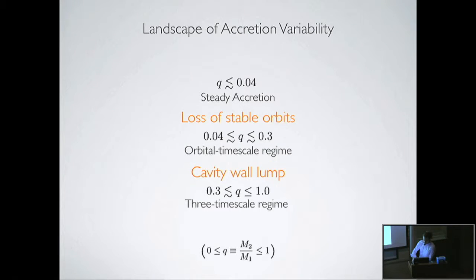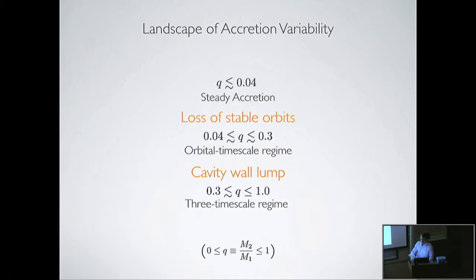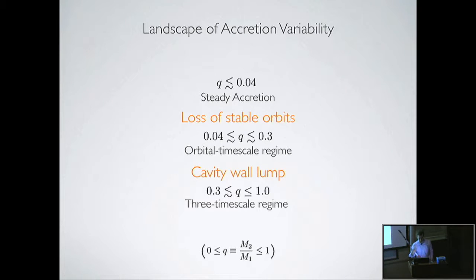I just wanted to paint this picture with mass ratio. I haven't said anything about eccentricity—there are a few groups working on what happens to this periodicity with eccentric binaries, which you might expect because these lopsided cavities can drive the binary to become eccentric, which is important for understanding the gravitational wave background. I wanted to put forward this mass-ratio-dependent picture of what you might expect from periodicities, because it's interesting to look for perhaps a smoking-gun signature if you have these three periodicity timescales, and it can help you infer the mass ratio.